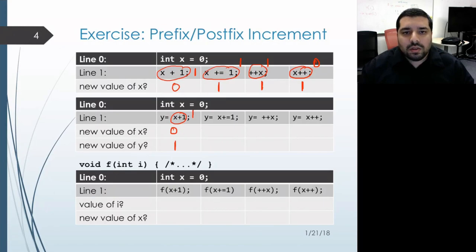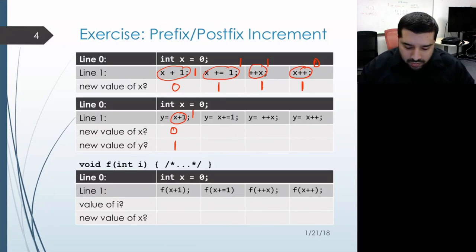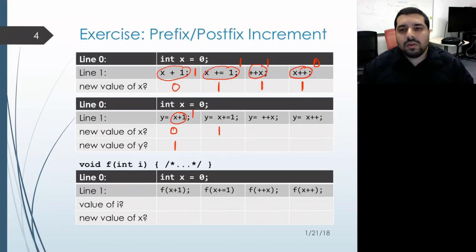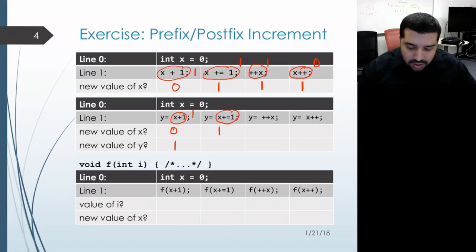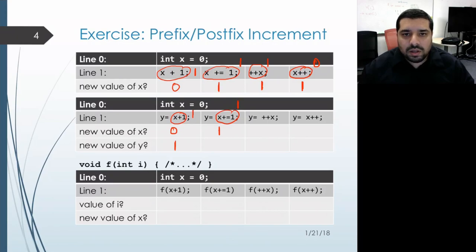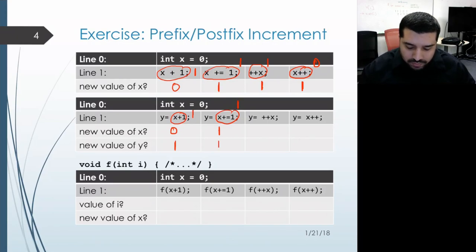Looking at our second example, x gets incremented so its value becomes 1, and then the result of that entire expression is the x object which has value 1, so y also gets the value 1.